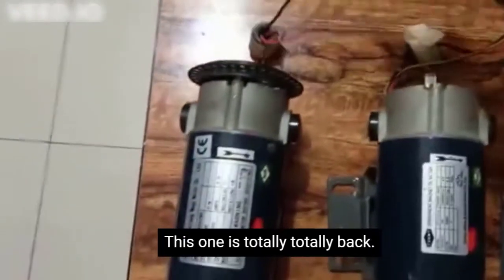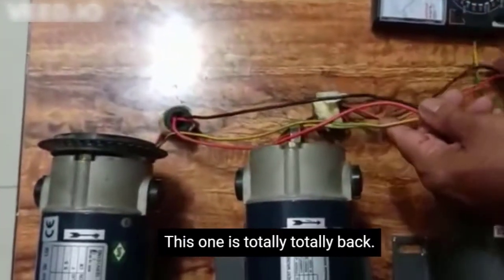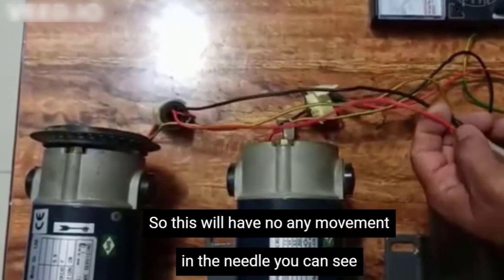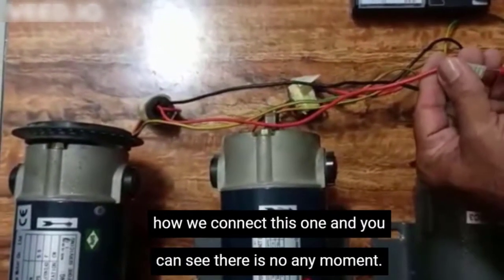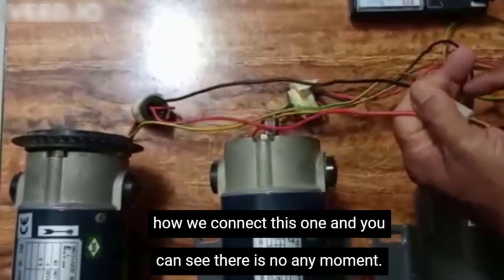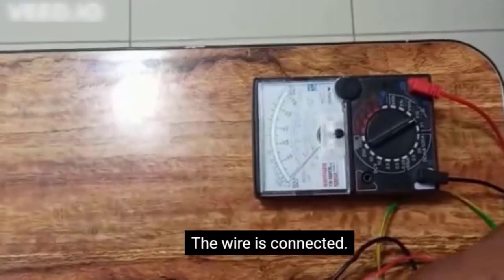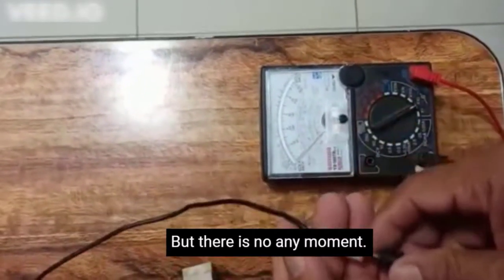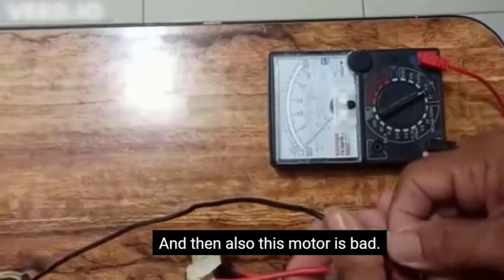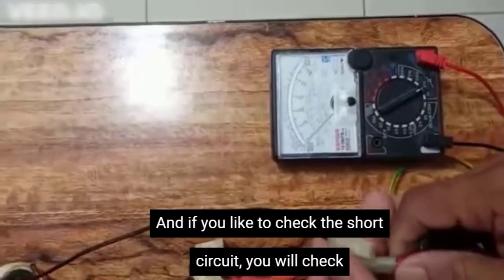Now the third one I am going to check. This one, as I told you, is totally bad. So this will have no movement in the meter. You can see, I will connect this one. And you can see there is no movement. The wire is connected, but there is no movement in the meter. So this motor is bad.